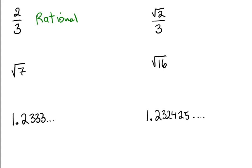Below that, radical seven. Is radical seven rational? No, this one is irrational because it is the radical of a non-perfect square.